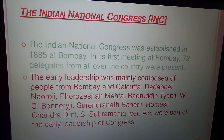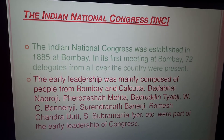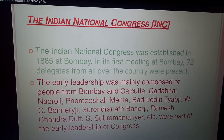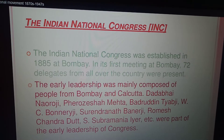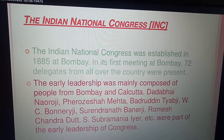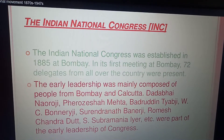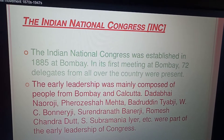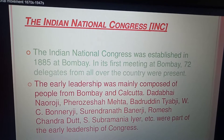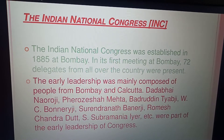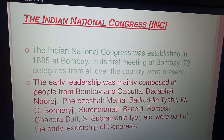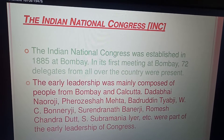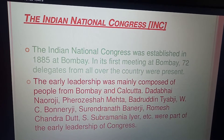These 72 delegates came from all over the country and attended the first meeting. The early leadership was mainly composed of people from Bombay and Calcutta. The early leaders of Congress included Dadabhai Naoroji, Pherozeshah Mehta, Badruddin Tyabji, W.C. Banerjee, Surendranath Banerjee, Romesh Chandra Dutt, and Subramaniam Iyer, among others.